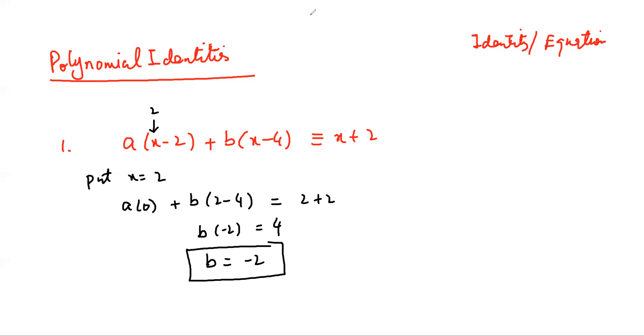Similarly, again, you can put your X as 4. If you put X equal to 4, you can get to the value of A. Like this is A into 4 minus 2 plus B into 0. That is equal to 4 plus 2. So this is 2A that is equal to 6. And your A is going to be equal to 3. So that is how you can find the unknown.